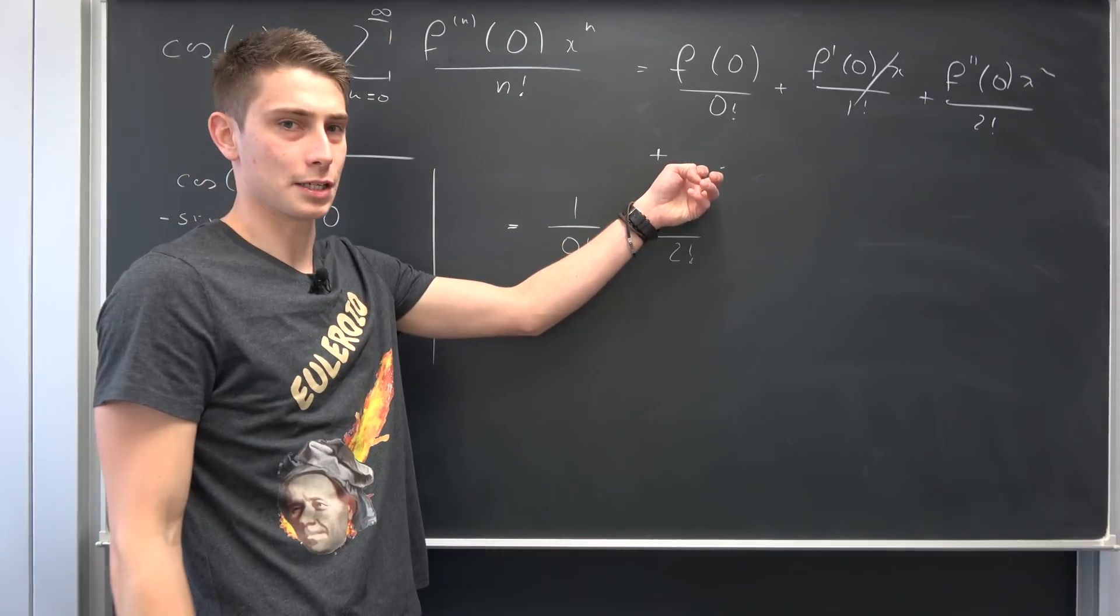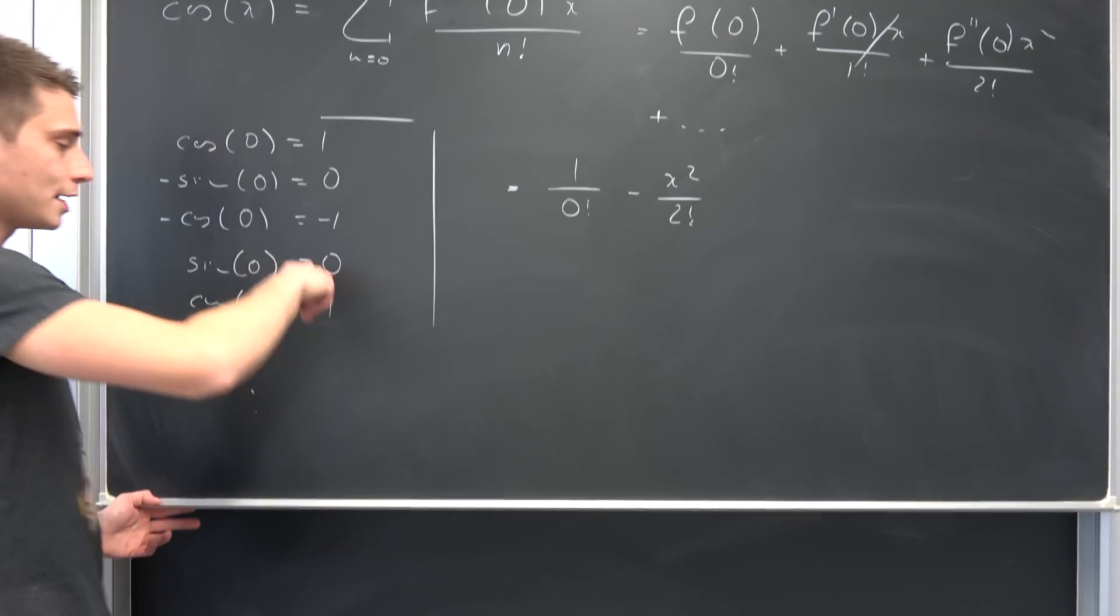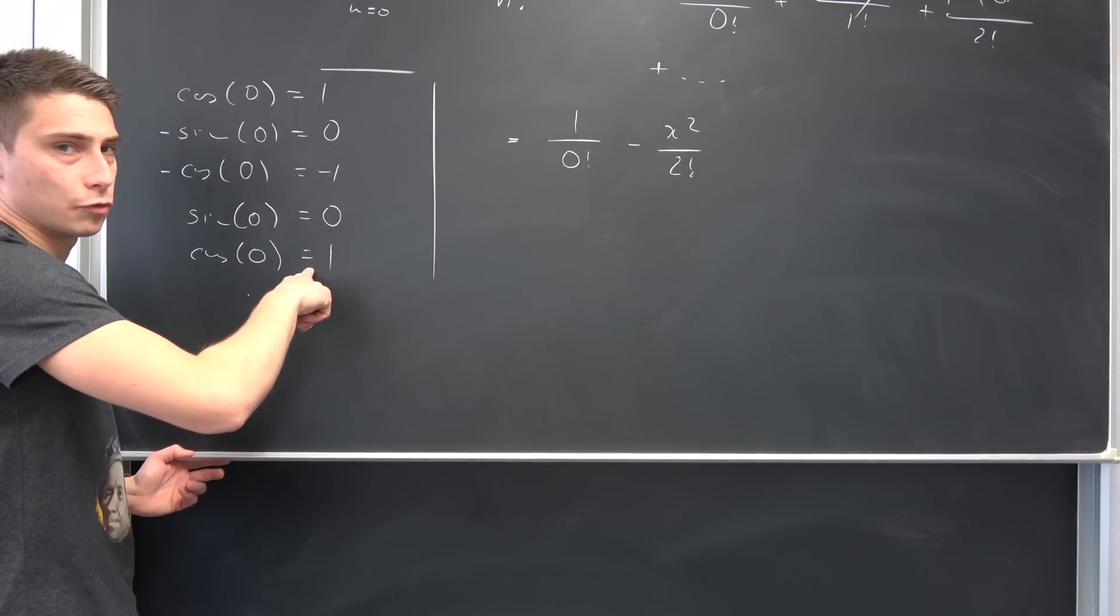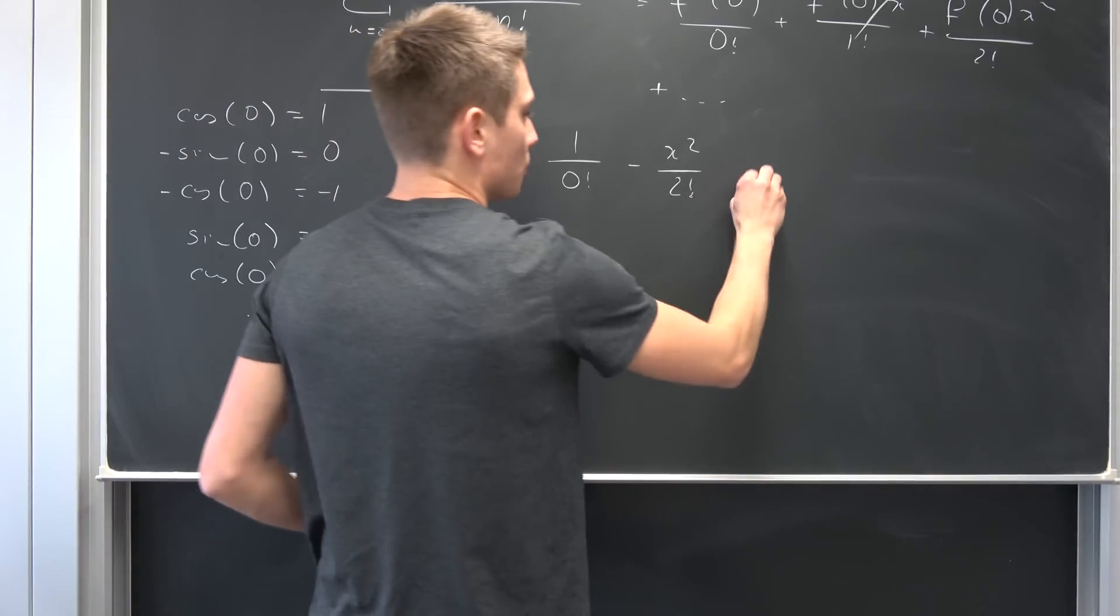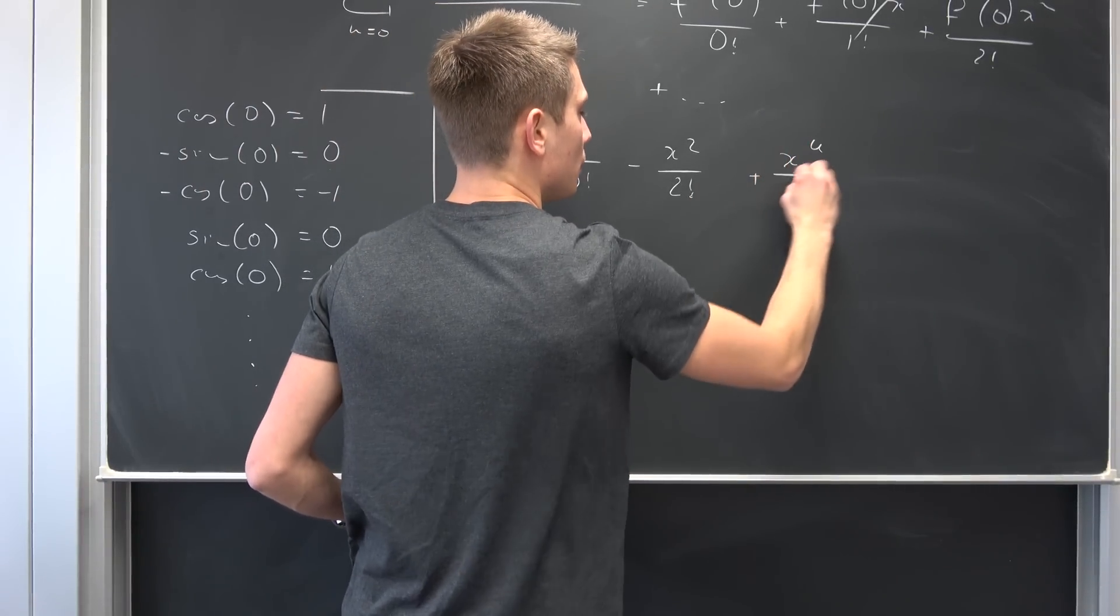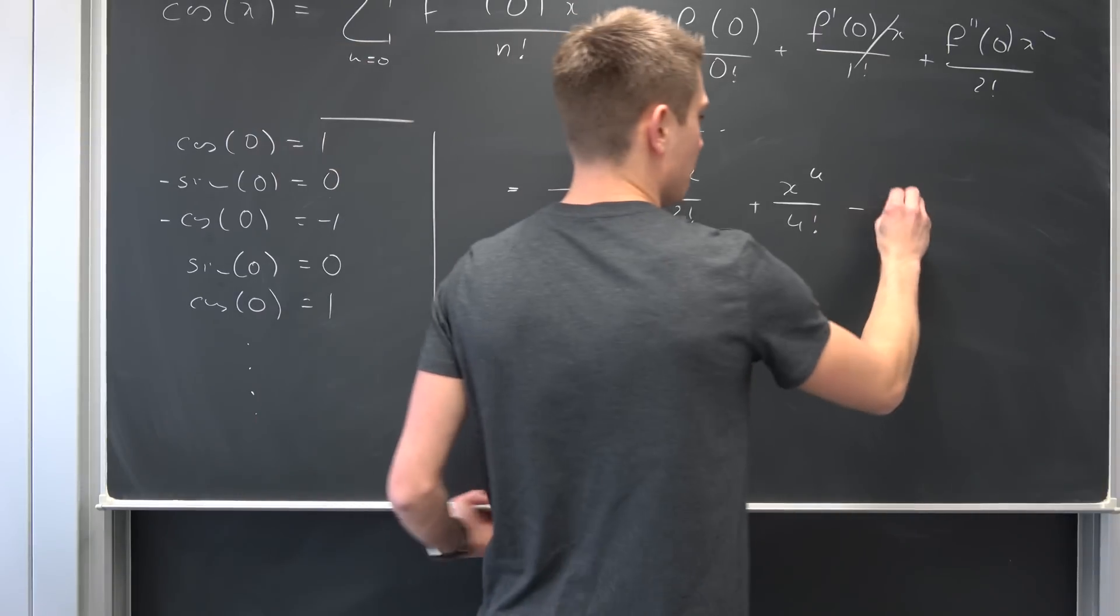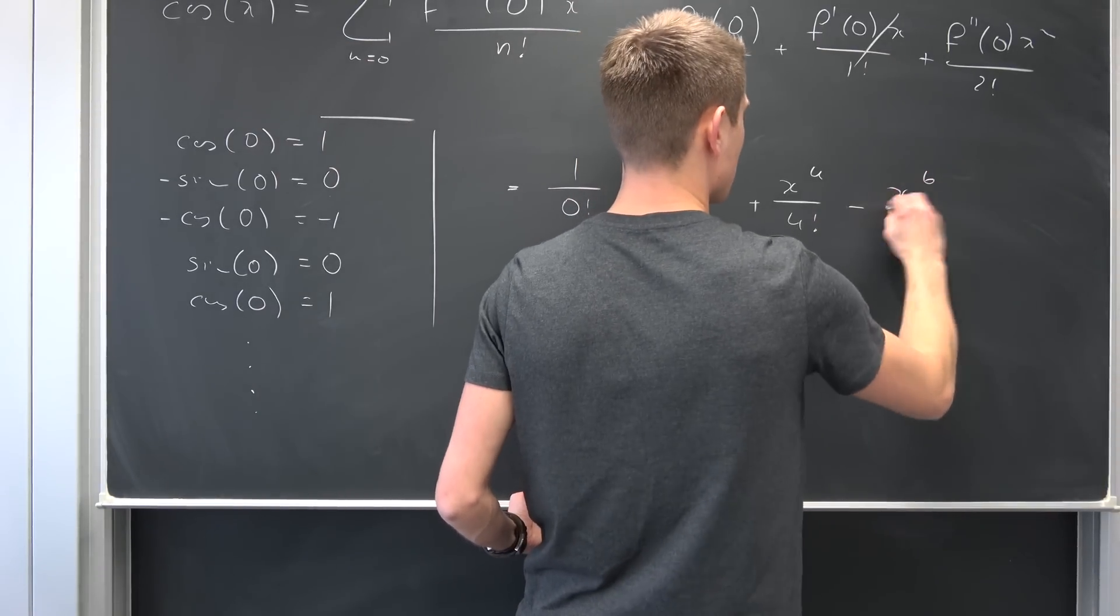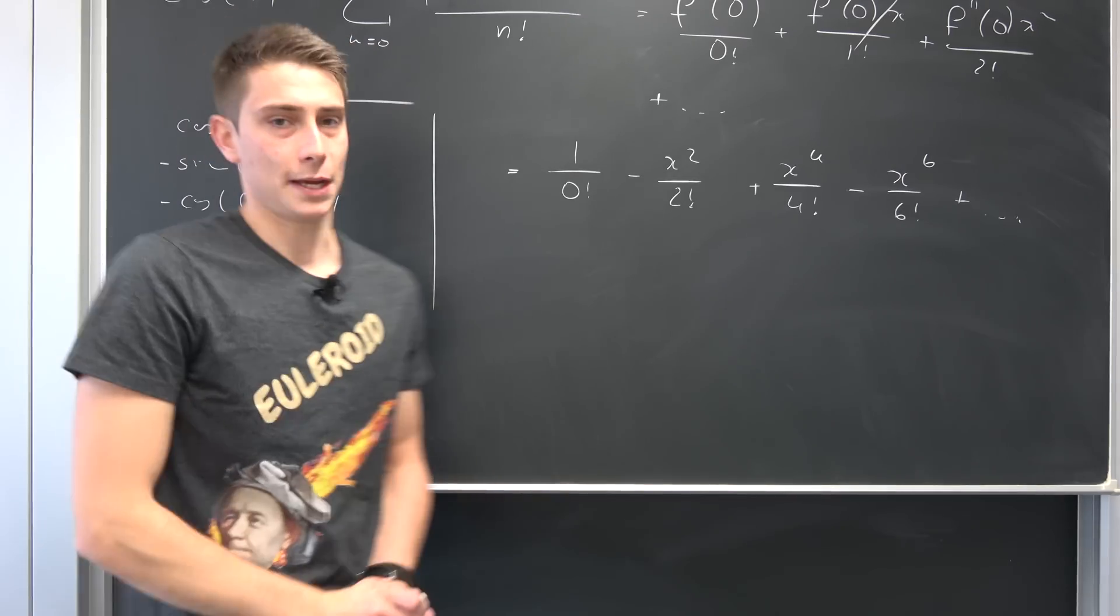This next term is an odd term. Third derivative is going to give us zero at zero. So this is going to vanish. And the next term with four factorial is going to be just a regular one. So positive x to the fourth power over four factorial. The next term would be negative x to the sixth power over six factorial plus dot dot dot. I hope you can see the pattern.